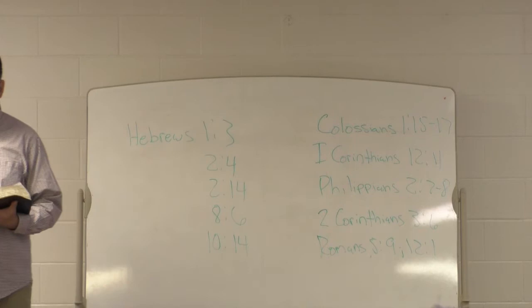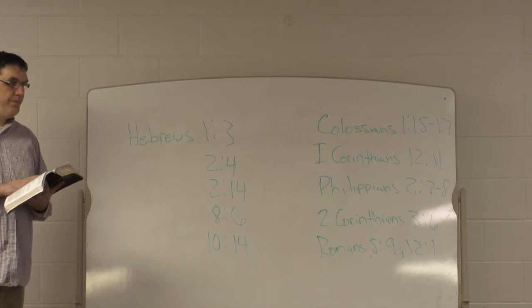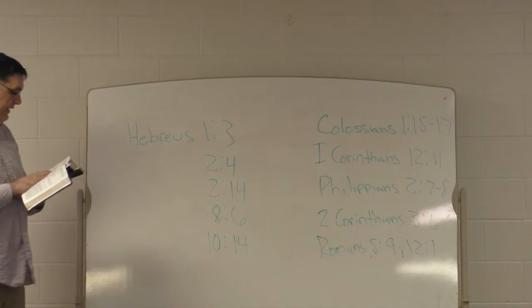Alright. Philippians 2, 7 through 8. Rather, he made himself nothing by taking the very nature of a servant, being made in human likeness, and being found in appearance as a man. He humbled himself by becoming obedient to death, even death on a cross.